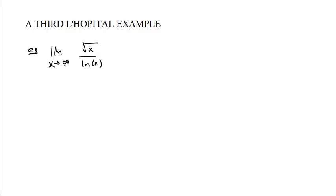so square root of x and natural log of x are both going to infinity. As x goes to infinity, the square root of x also goes to infinity. And as x goes to infinity, the natural log of x goes to infinity. So it's now a race. Which one is going to infinity faster?